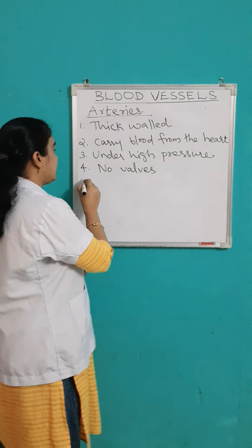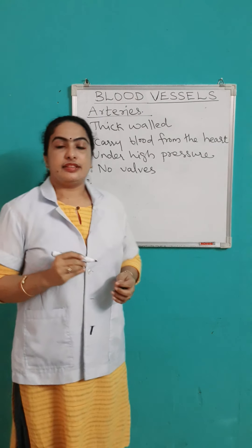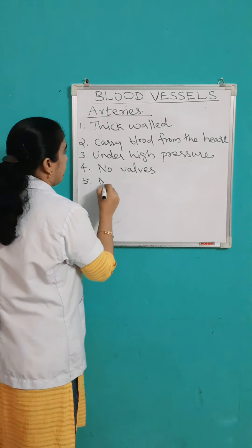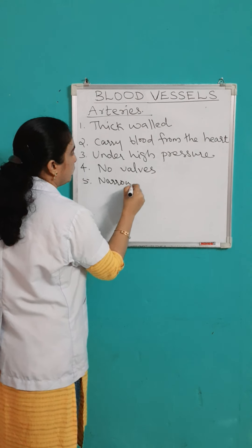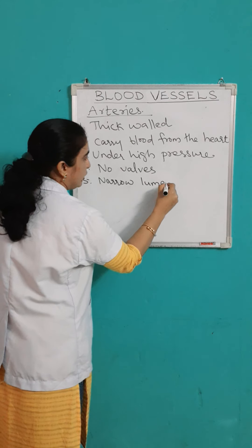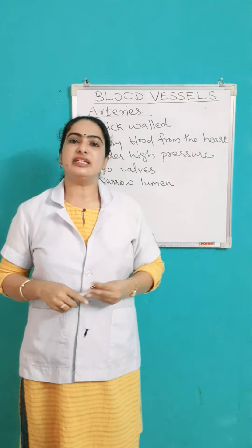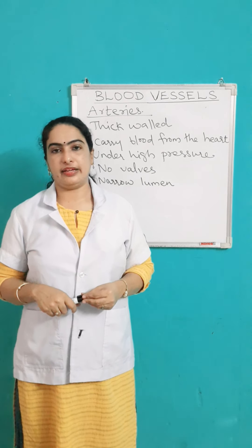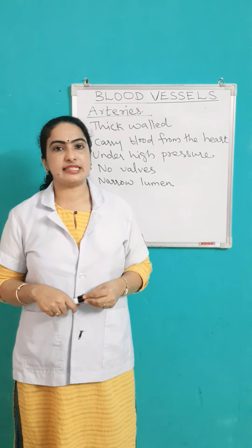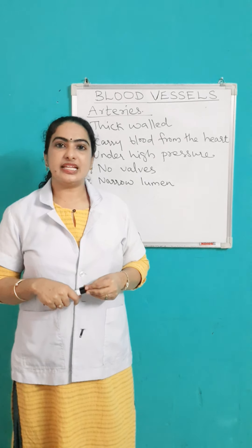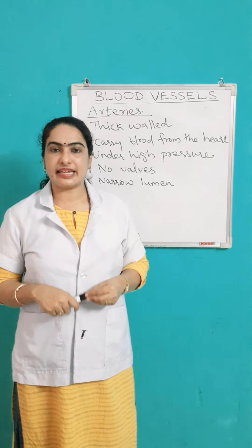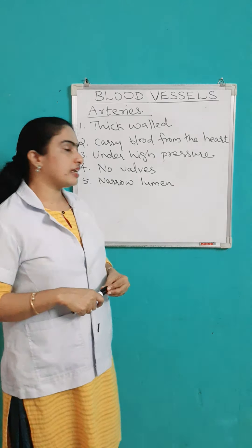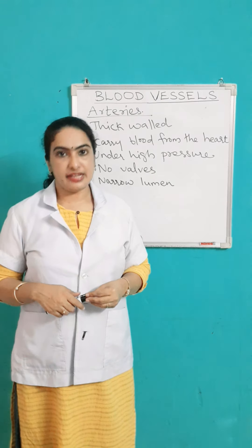The next point is the lumen is very narrow. Lumen is a cavity or space inside a tubular organ — here the tubular organ is the blood vessel. So inside the blood vessel there is a cavity or space, and that cavity is known as lumen. In case of arteries, the lumen is very narrow.